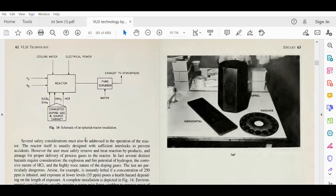Several safety considerations must also be addressed in the operation of the reactor. The reactor itself is usually designed with sufficient interlocks to prevent accidents. However, the user must safely remove and treat reaction byproducts and arrange for proper delivery of process gas to the reactor. Several distinct hazards require consideration: the explosion and fire potential of hydrogen.